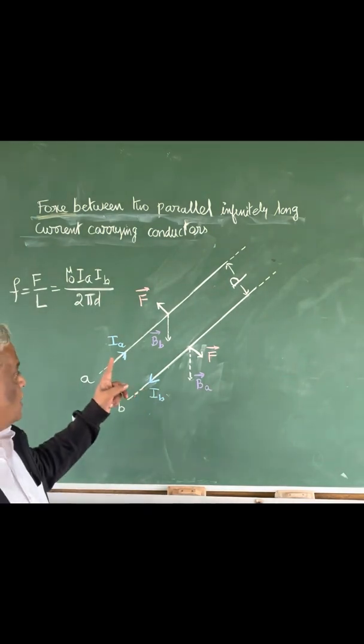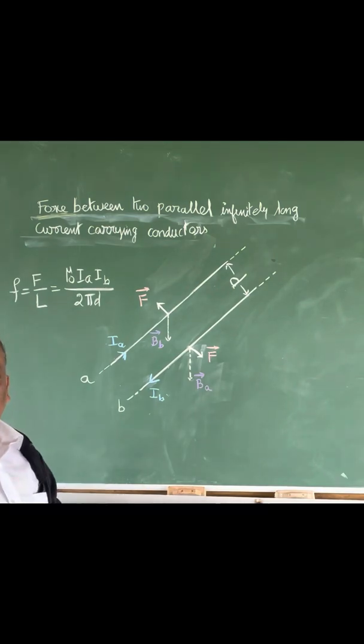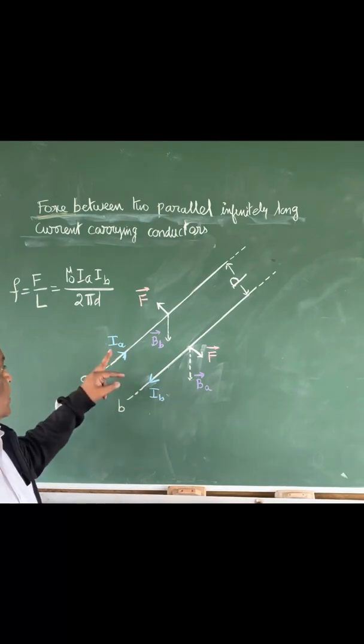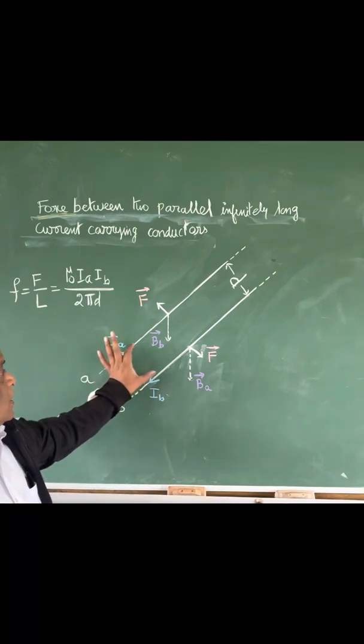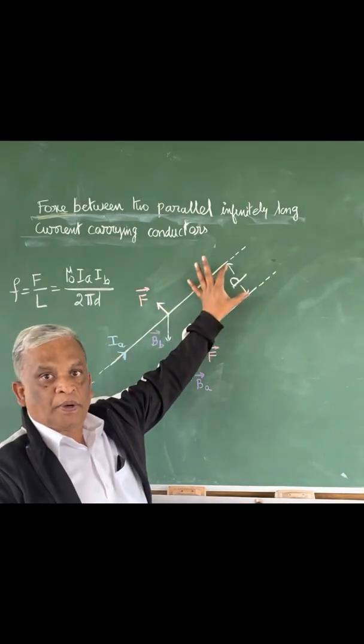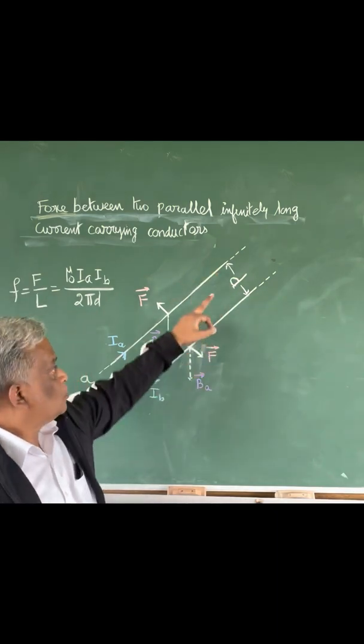In this case they carry current in opposite directions. The two conductors are namely conductor A, conductor B, current through conductor A is IA, current through conductor B is IB. The distance of separation between the two parallel conductors is d.